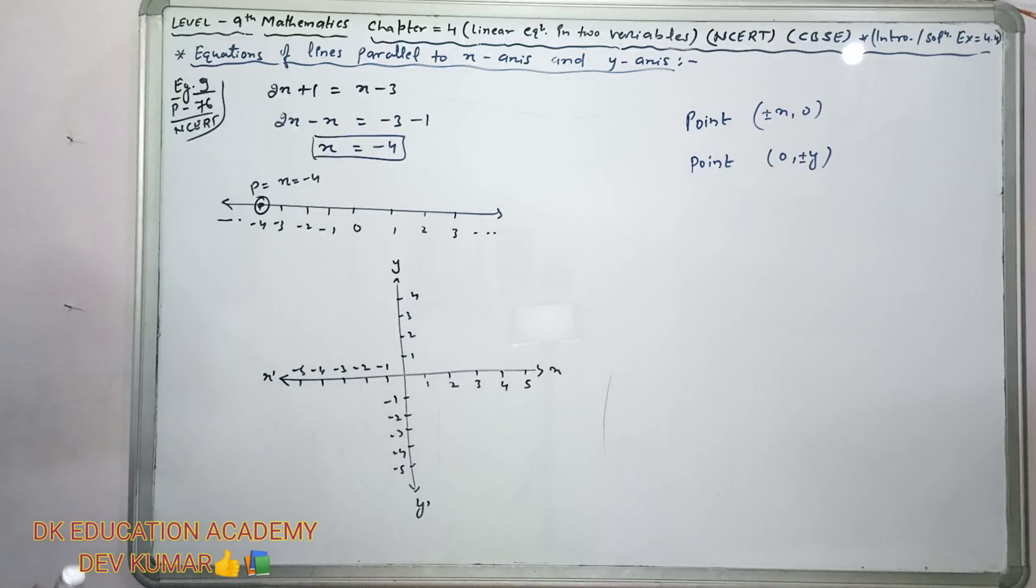Keep in mind that when you have a single point as a line, it is parallel to X-axis or Y-axis. Because the point was on X-axis, the line will be parallel to X-axis. The line will pass through the value of x, which is minus 4. So the line passes through x equals minus 4 parallel to Y-axis.